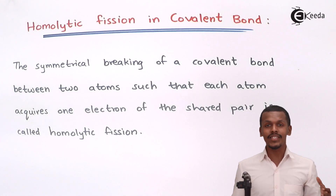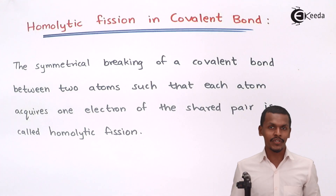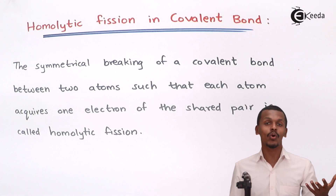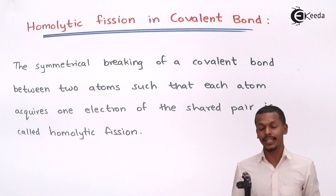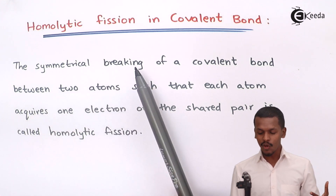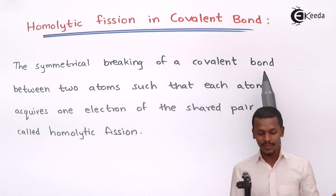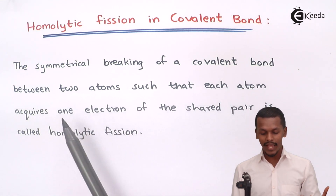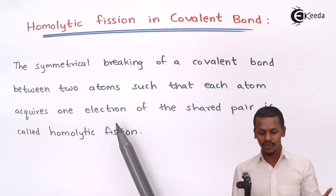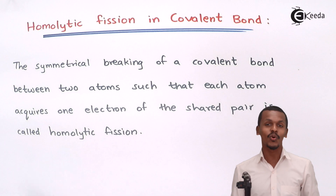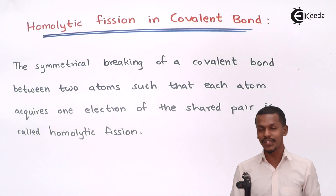Let us understand what homolytic fission actually is. The definition states: the symmetrical breaking of a covalent bond between two atoms such that each atom acquires one electron of the shared pair is called homolytic fission.